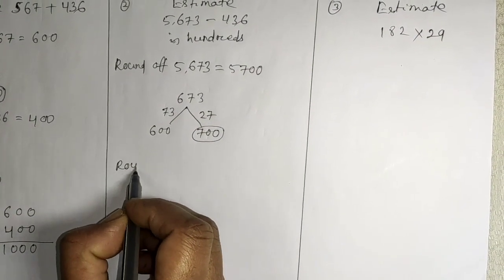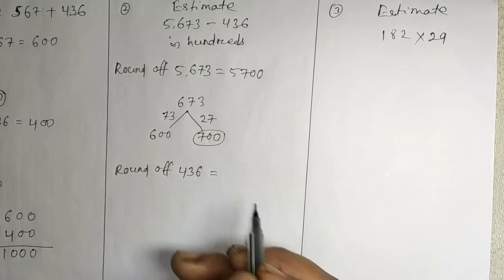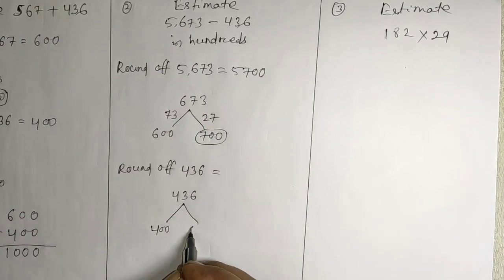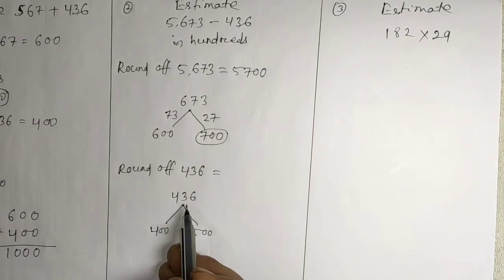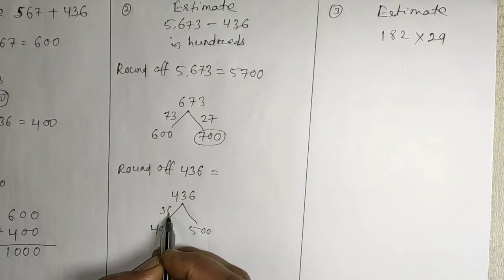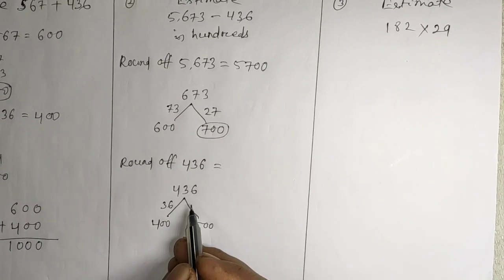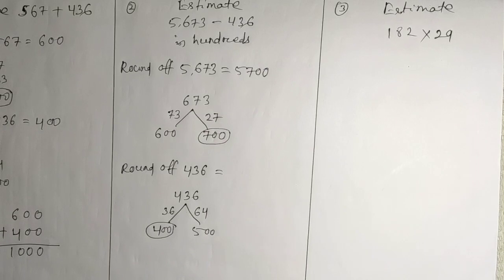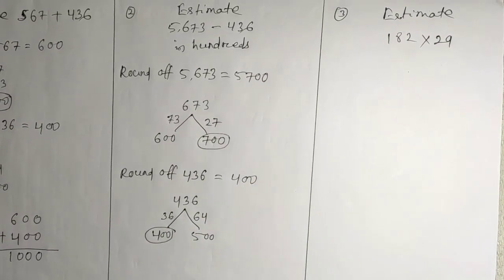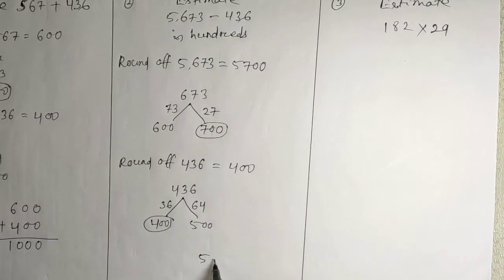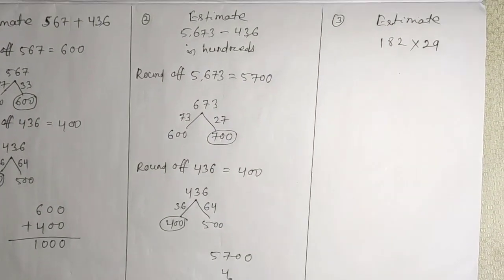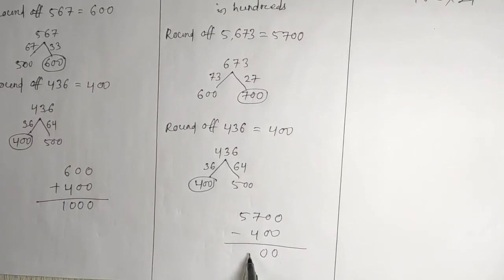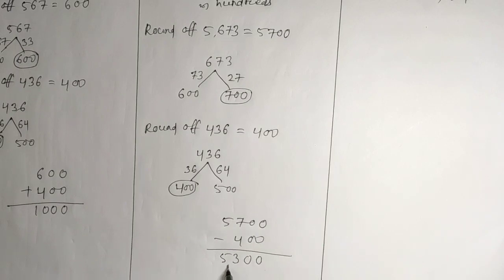Round off 436 — it lies between 400 and 500. Difference from 436 to 400 is 36, and from 500 to 436 is 64. So the nearest is 400. Then subtract: 5700 minus 400 equals 5300.